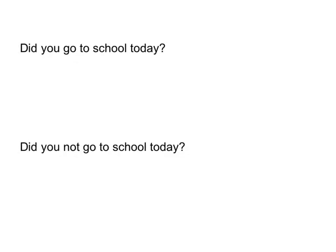Did you go to school today? There are two ways to answer this question: either yes or no. If you're asked 'did you go to school today' and you say yes, that means you went to school, and if you said no, that means you didn't go to school. Now if someone asks 'did you not go to school today' and your answer is yes, you're actually saying yes, I did go to school today, and if your answer is no, then you're saying no, I did not go to school today.